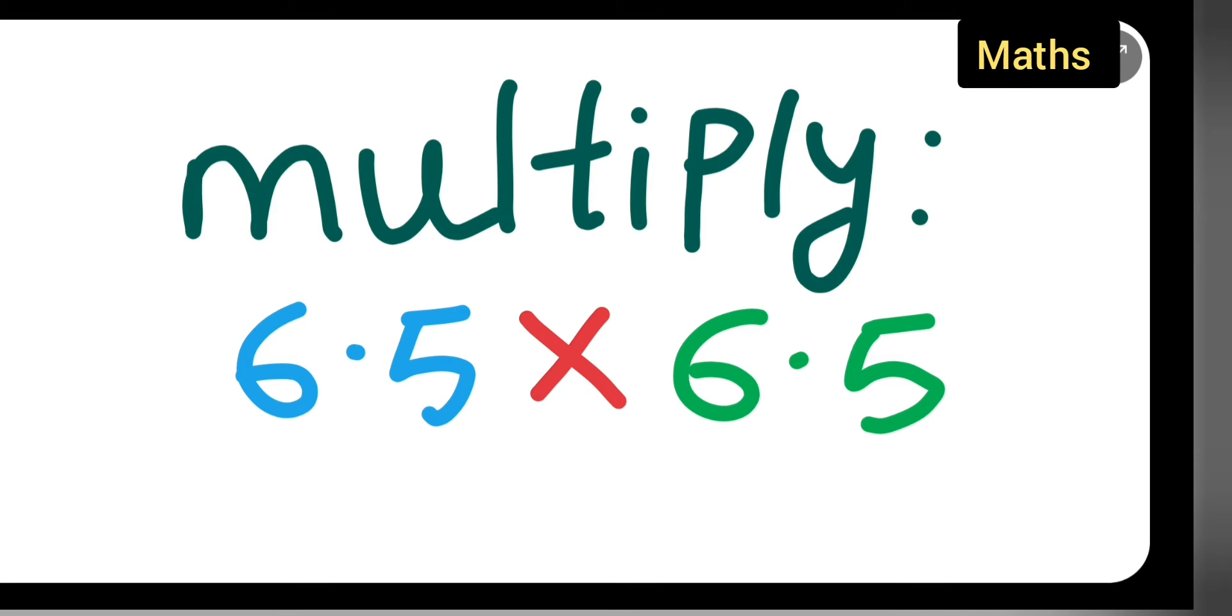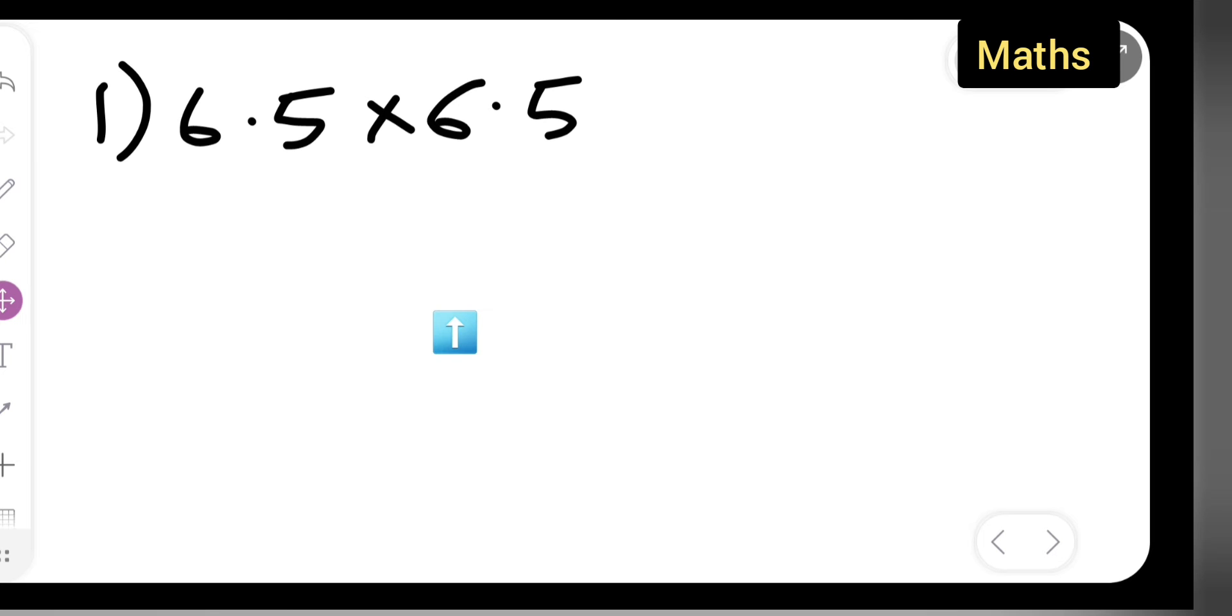Welcome to today's class of mathematics. Today's question is multiply 6.5 multiplied by 6.5. Let us see how to multiply numbers with a decimal point, because many of you will find it difficult, so let me do it.